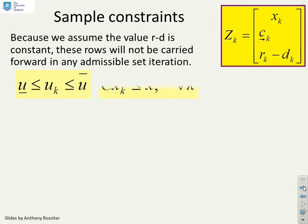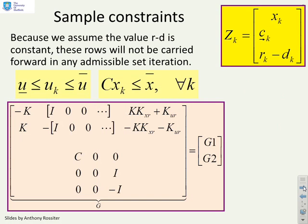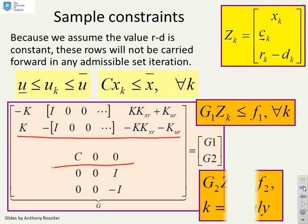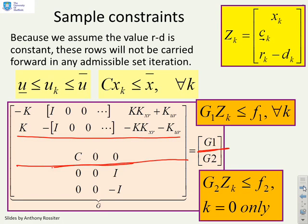The constraints at each sample for input constraints, state constraints, and so on can be written down using blocks: the top block for input constraints, the next block for state constraints, and the final block for limits on r minus d. The top bit, g1, has to be satisfied at every sample, whereas the bottom bit only has to be satisfied at the first sample.